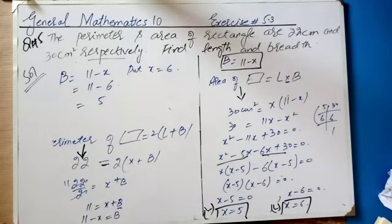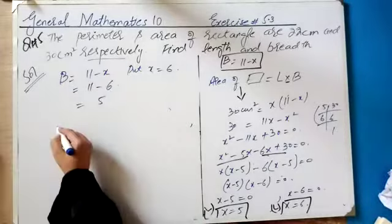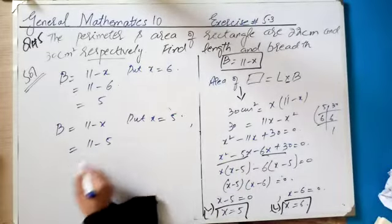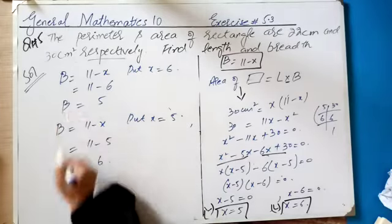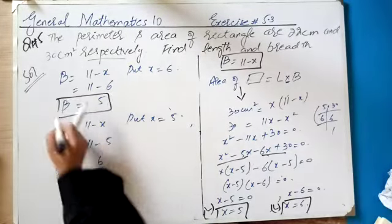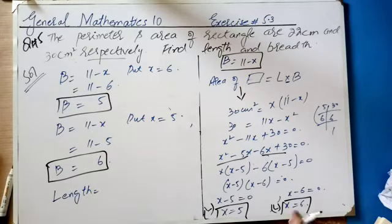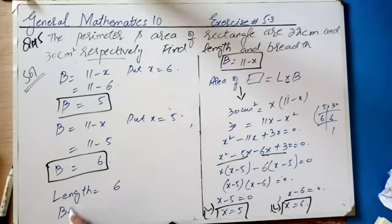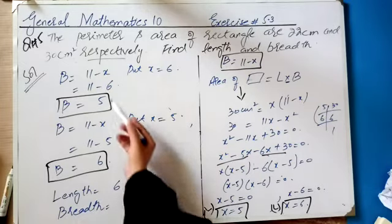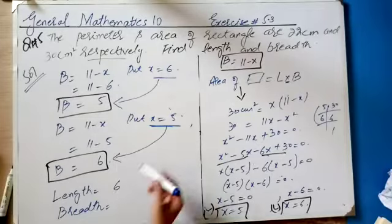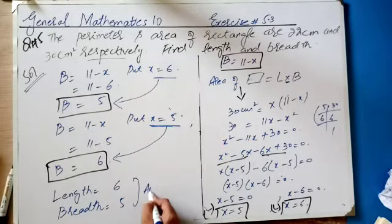Clear. Now you can also put the other value: breadth = 11 − x, put x = 5, this gives 11 − 5 = 6. So the answer is: length = 6 cm (greater term) and breadth = 5 cm. When we put x = 6, breadth answer comes as 5, and when we put x = 5, breadth answer comes as 6. This is your answer. Clear?